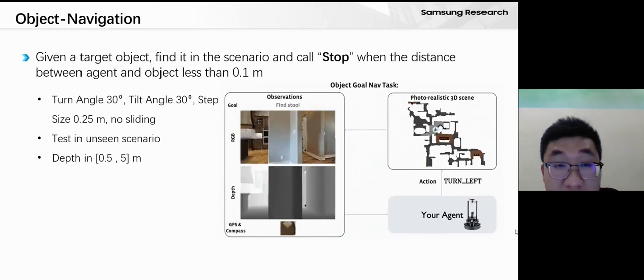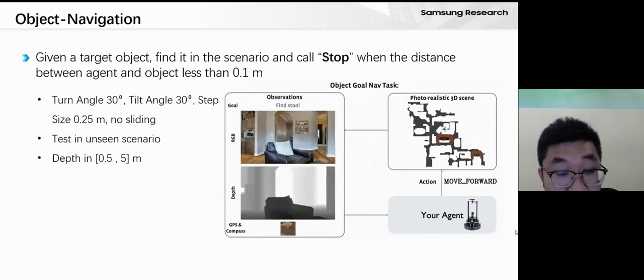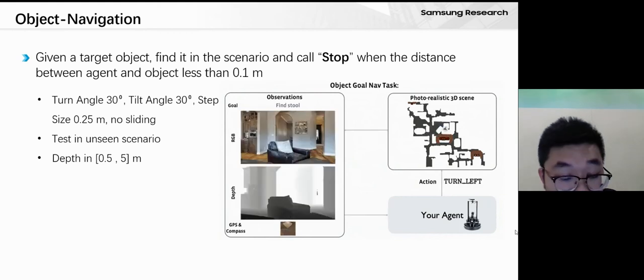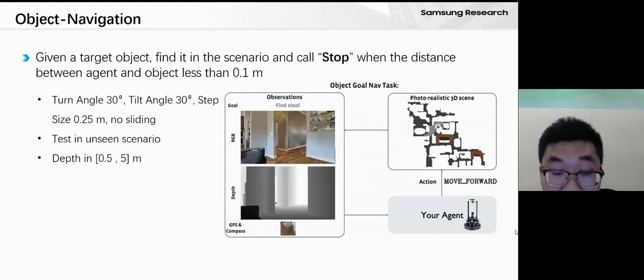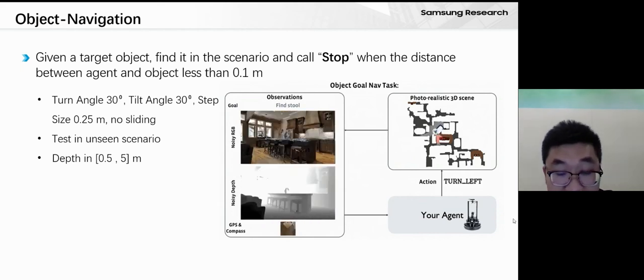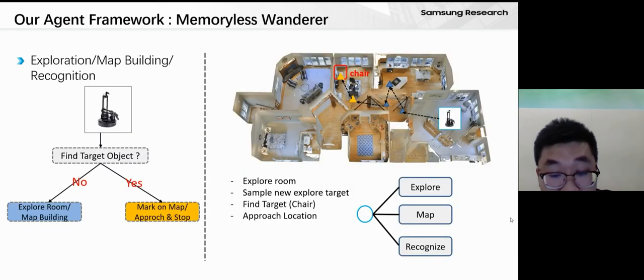Our solution focuses on the object navigation problem. According to the formal description, we need to find an instance of the given category object and call stop within a range of 0.1 meters. We formulate this task as a simple procedure including three main parts: exploration, map building, and recognition.